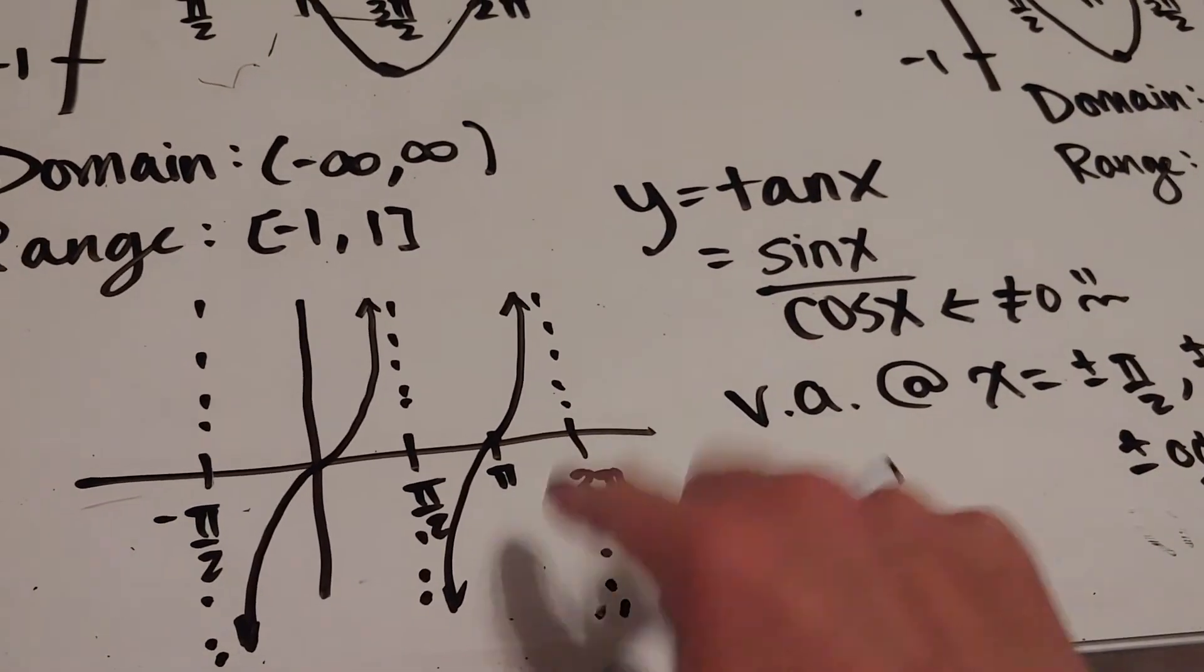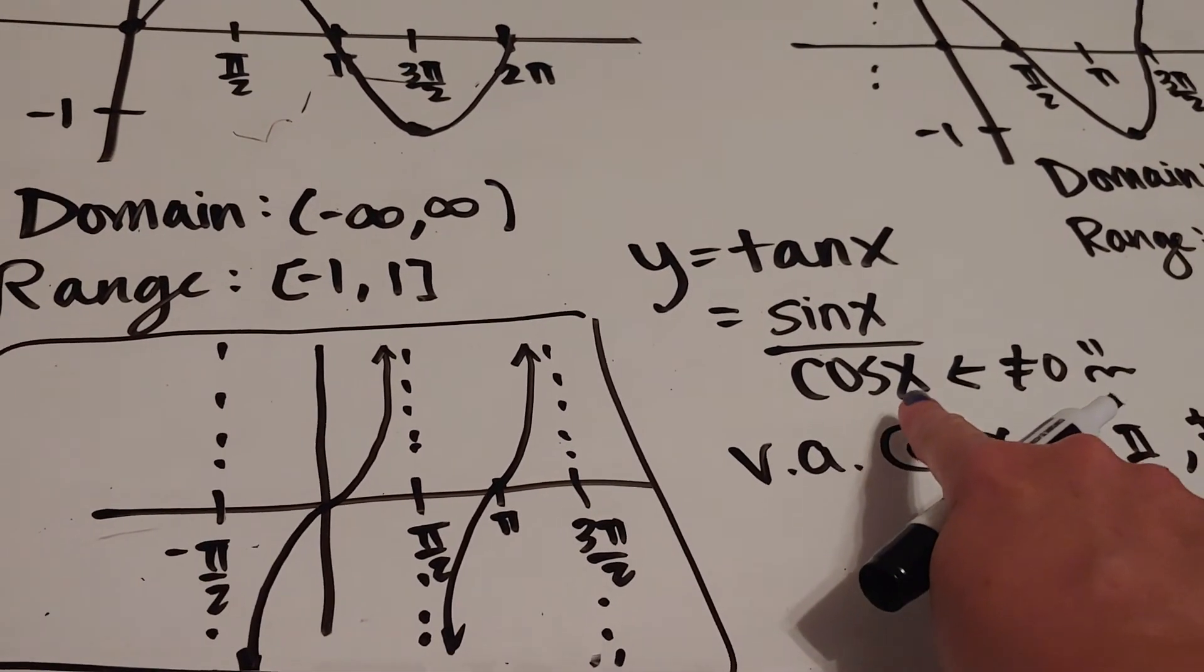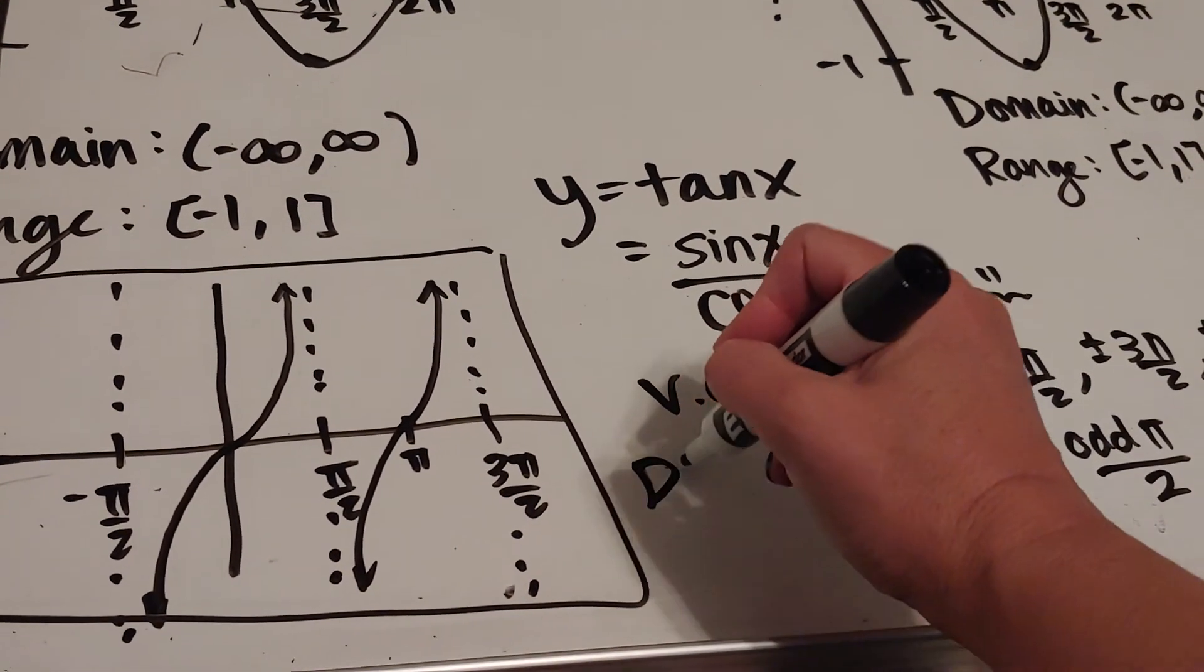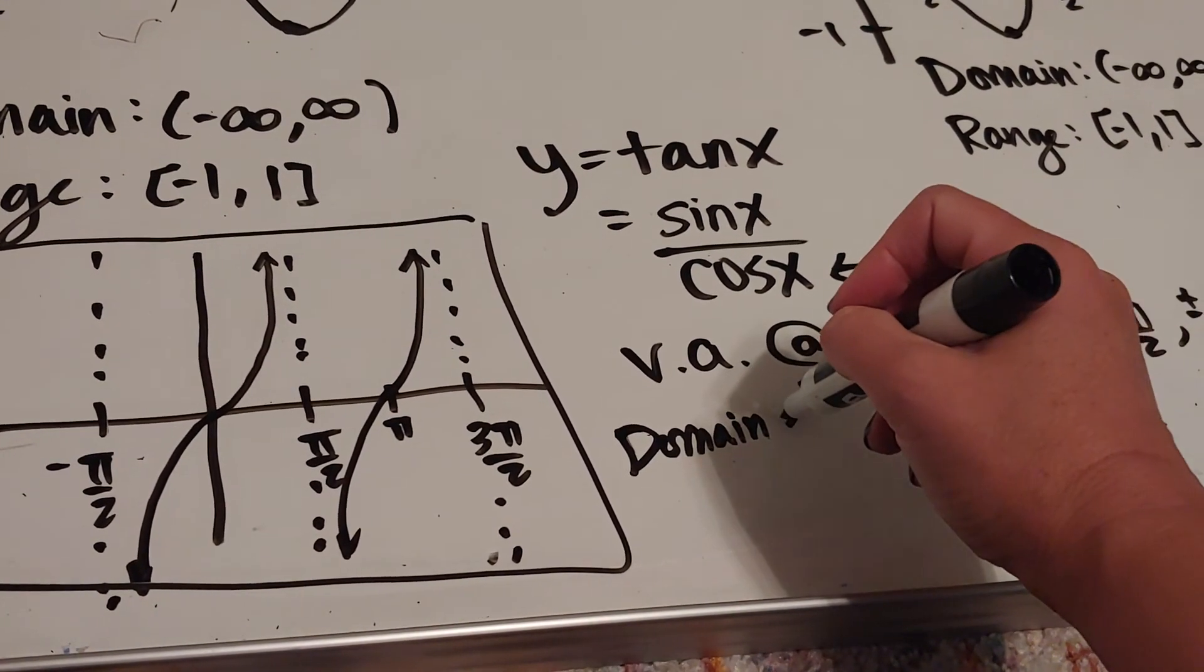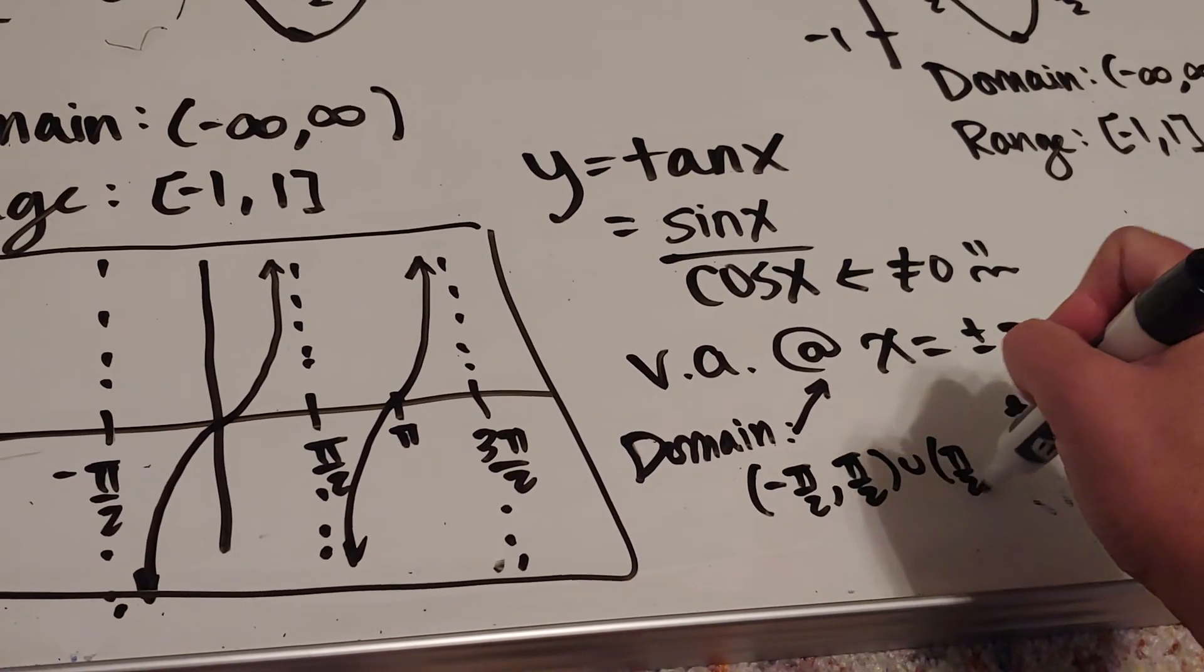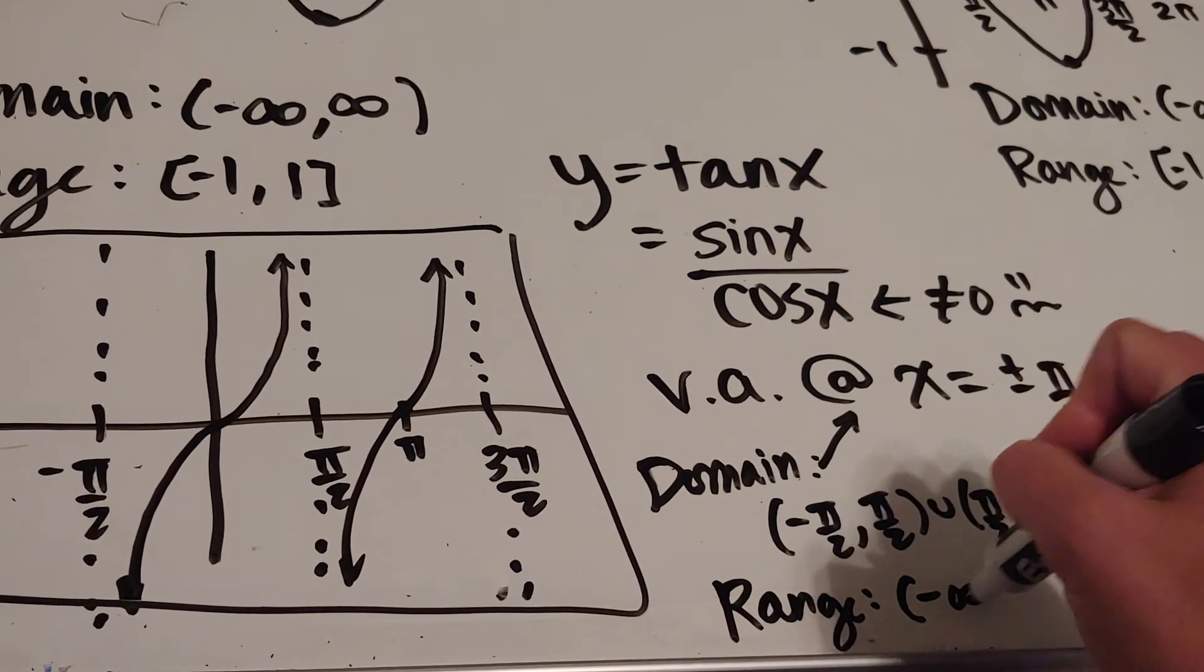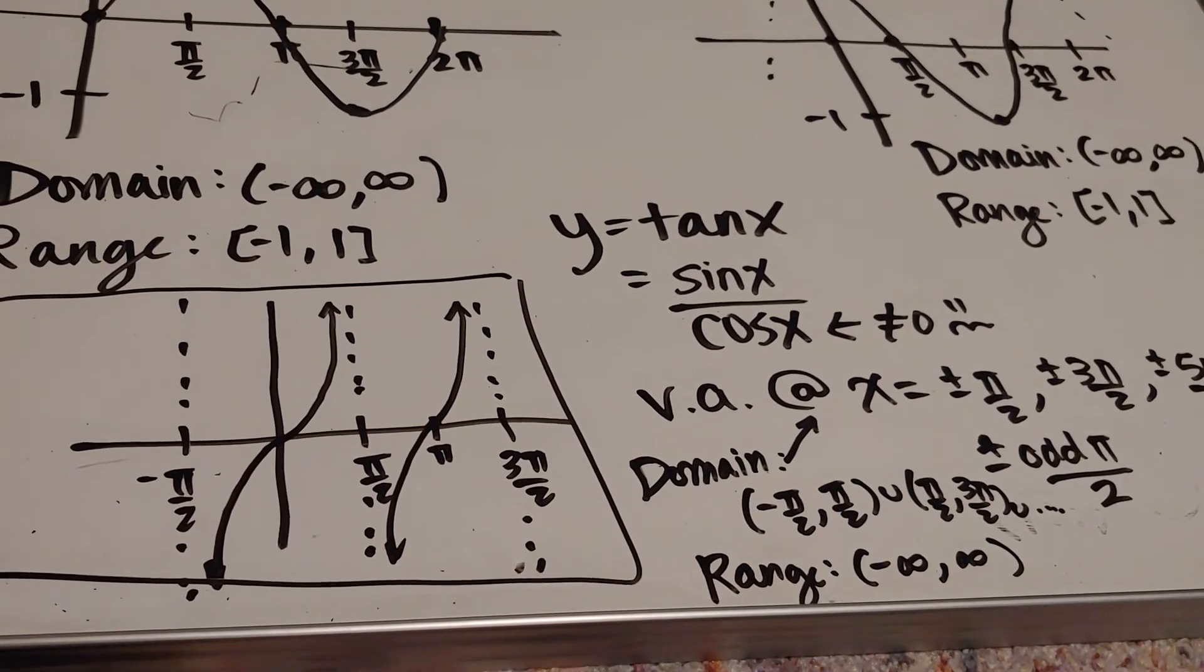What you really need to know is, for tangent, because cosine equals 0 is bad and we know when the cosine is 0, this is when we're going to have all of our problems. Our domain has problems everywhere there. Domain is going to be basically from negative π/2 to π/2, union π/2 to 3π/2, union—following that pattern. And the range actually is everything because it's going to go as far down negative and as tall positive as we want it to go.